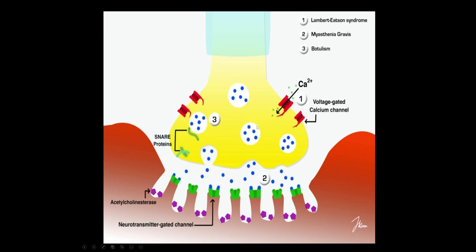Synaptic vesicles contain acetylcholine, and it is the influx of calcium that stimulates these vesicles via snare proteins, facilitating the vesicles binding with the presynaptic membrane and then releasing acetylcholine. These cross the neuromuscular junction where they stimulate nicotinic receptors, causing an action potential and muscle fiber depolarization. In the synaptic cleft we have acetylcholinesterase, which breaks down acetylcholine, and choline gets taken back up into the presynaptic terminal and is made back into acetylcholine.